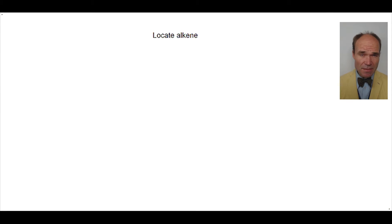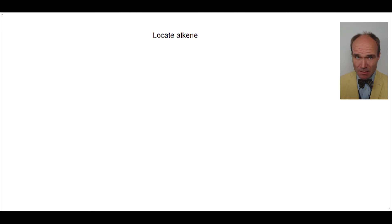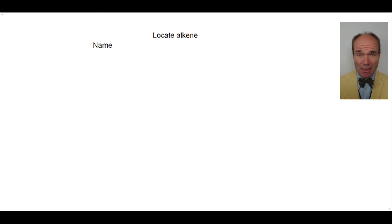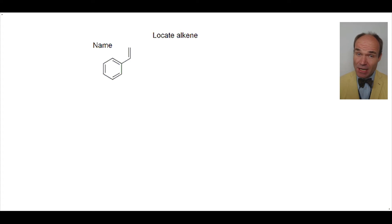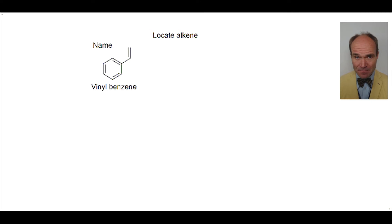In very specific situations there are terms to tell the position of an alkene in relation to other functional groups. When naming a molecule where the alkene is adjacent to another functional group, the alkene is termed vinyl. Here the alkene is adjacent to the benzene ring, and thus the name is vinyl benzene.